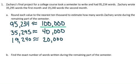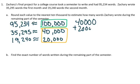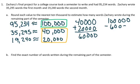So this is how much he had for the whole semester, and these two together is how much he wrote in the first month and the second month. So we want to know what he wrote during the remaining part of the semester. So we're going to have to add how much he wrote in the first month and second month and subtract it from the total amount. It's pretty easy when you have the rounded numbers. So 40,000 plus 20,000 is 60,000, and then 100,000 minus 60,000 is 40,000. So he wrote about 40,000 words for the remaining semester.